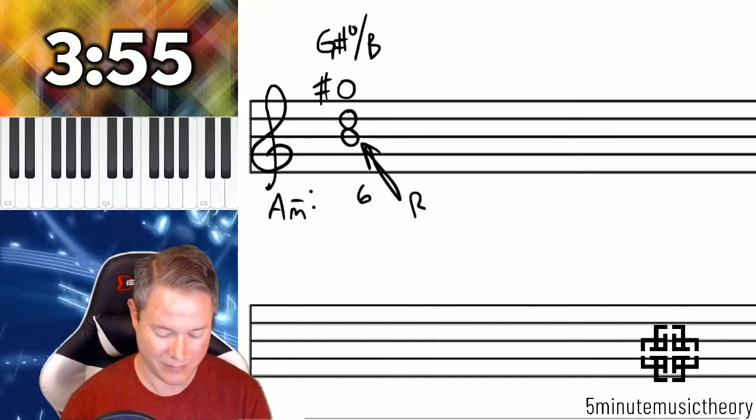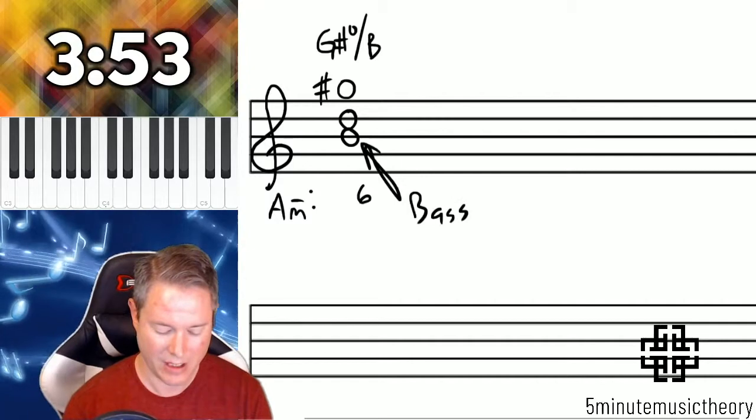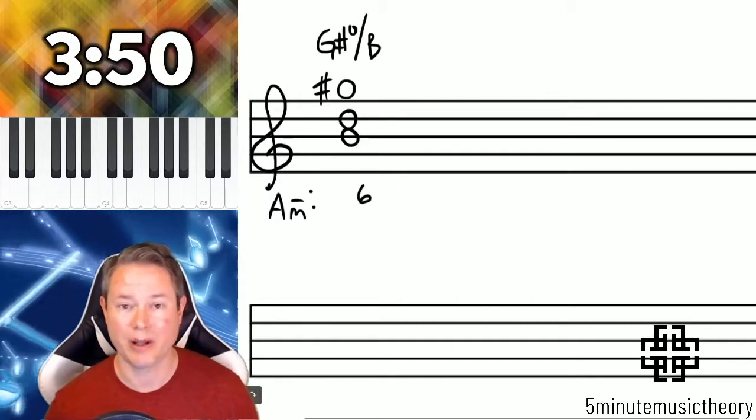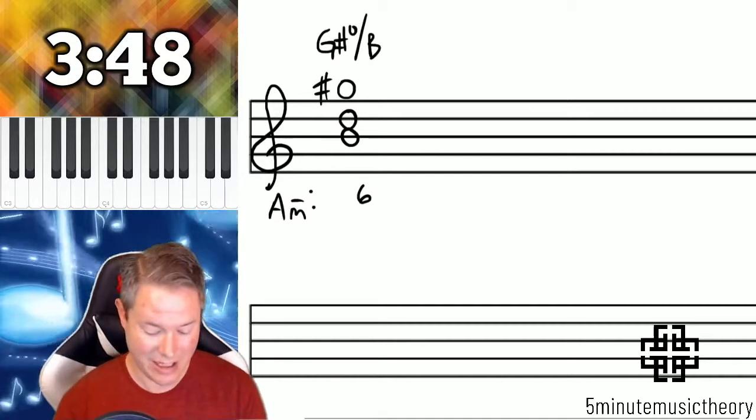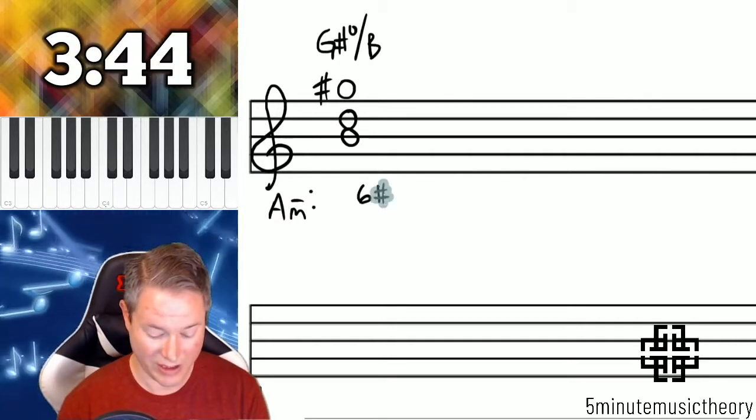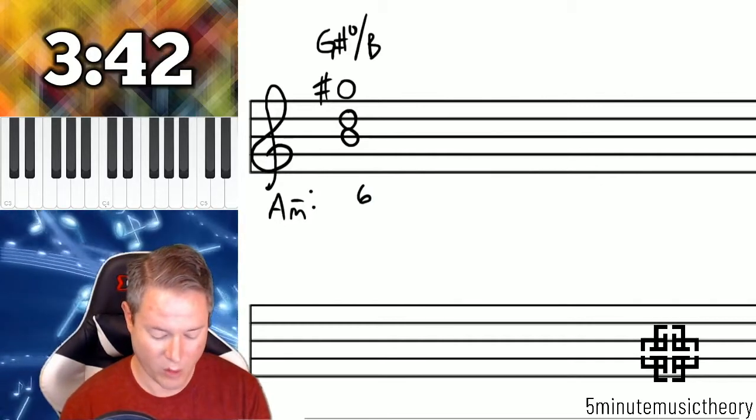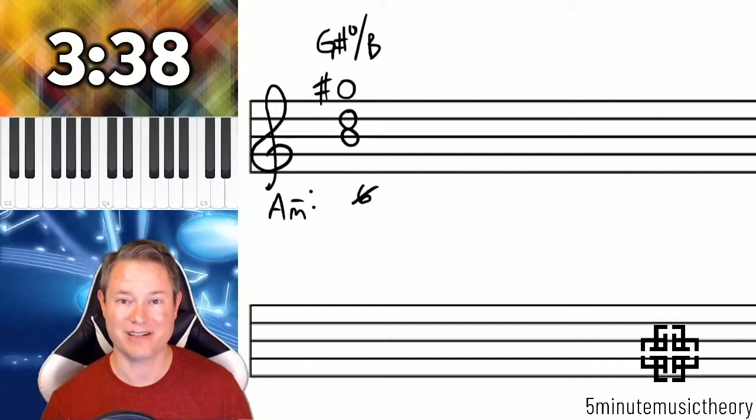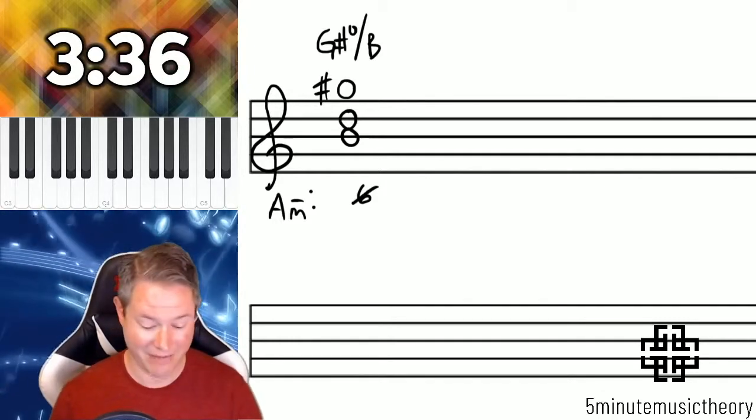Now the bass is B, that's our bass, and a 6th above B would be G, but we need to know that it's a G sharp. There's a few different ways of doing this. You could put a sharp next to the 6, which will indicate that there's a sharp, or the more common version is to put a slash through the 6. That slash means that note is raised by a half step.